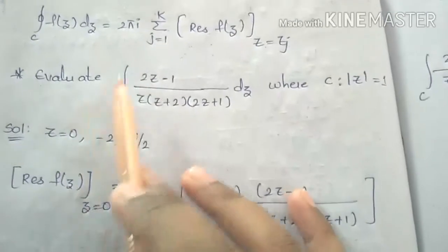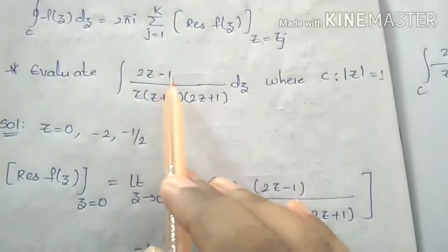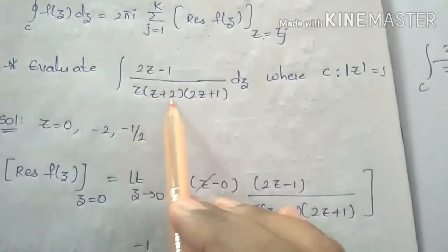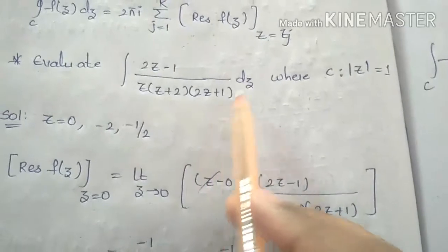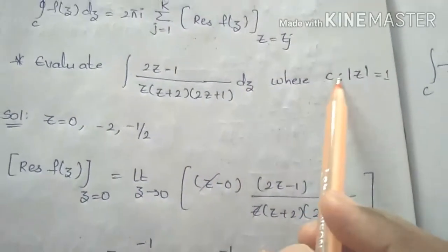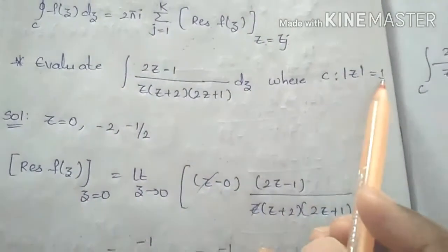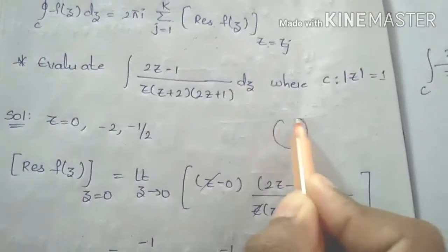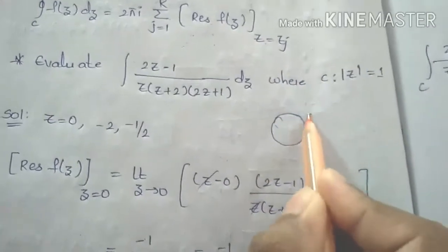The question is: evaluate the integration of (2z minus 1) divided by [z into (z plus 2) into (2z plus 1)] dz, where the circle is at |z| equals 1.